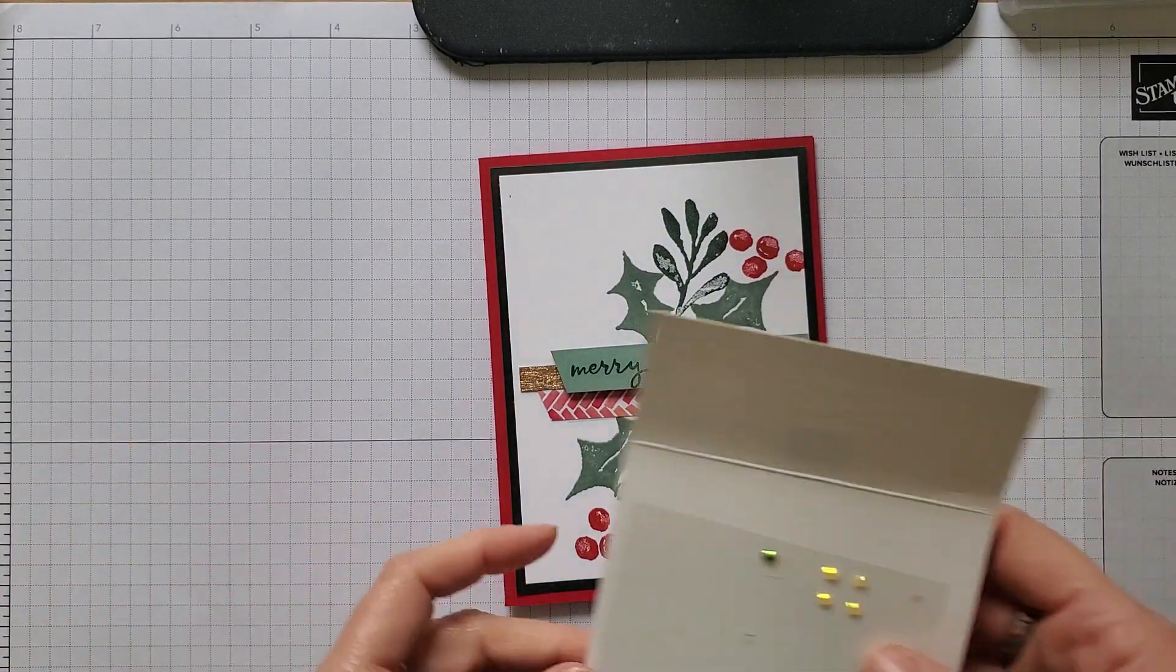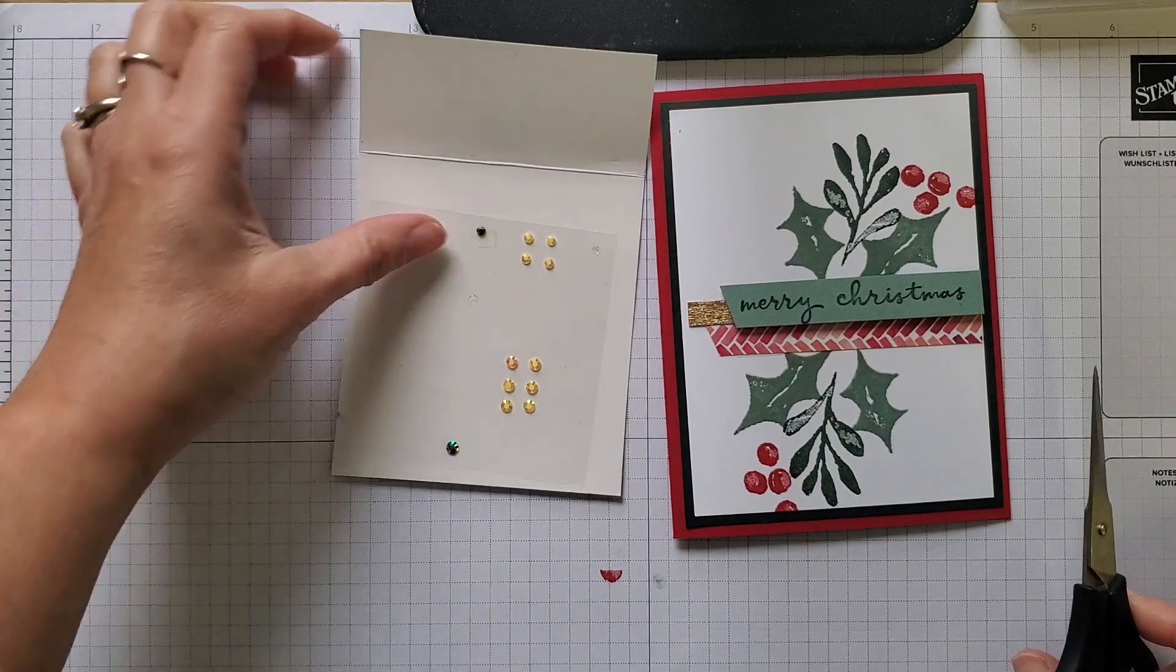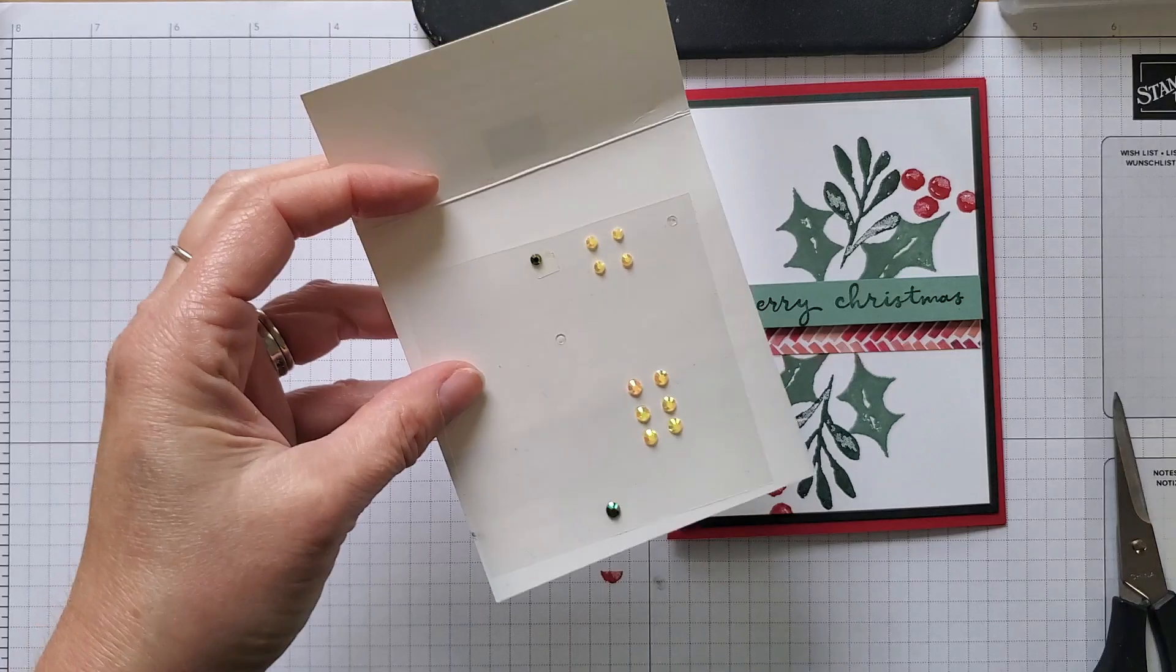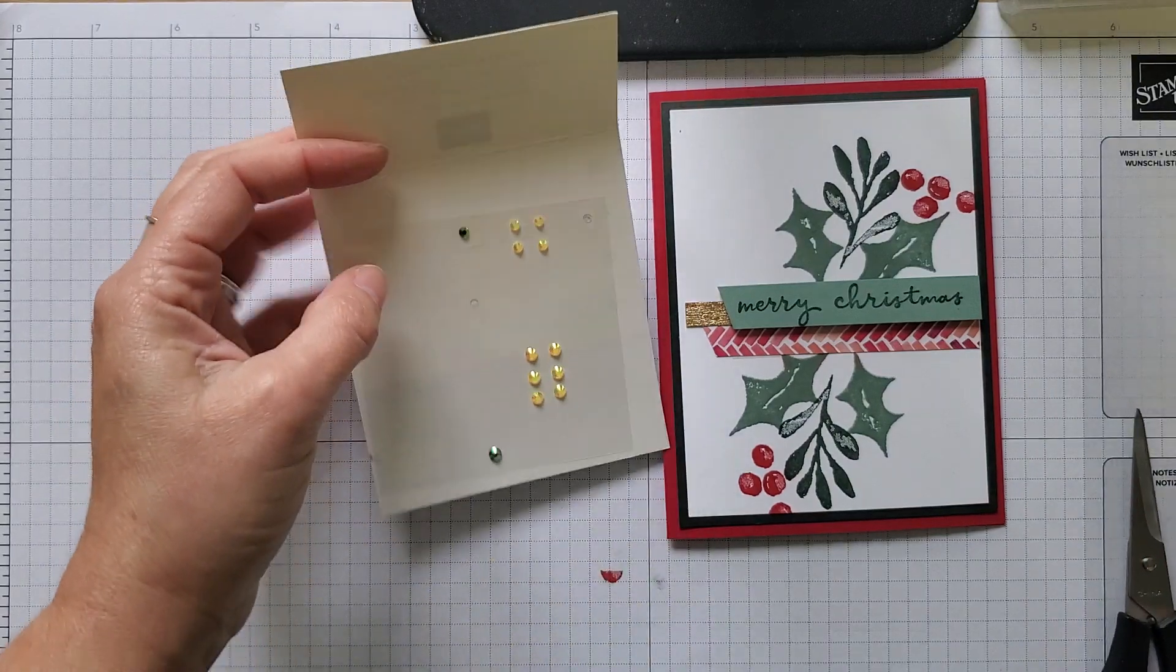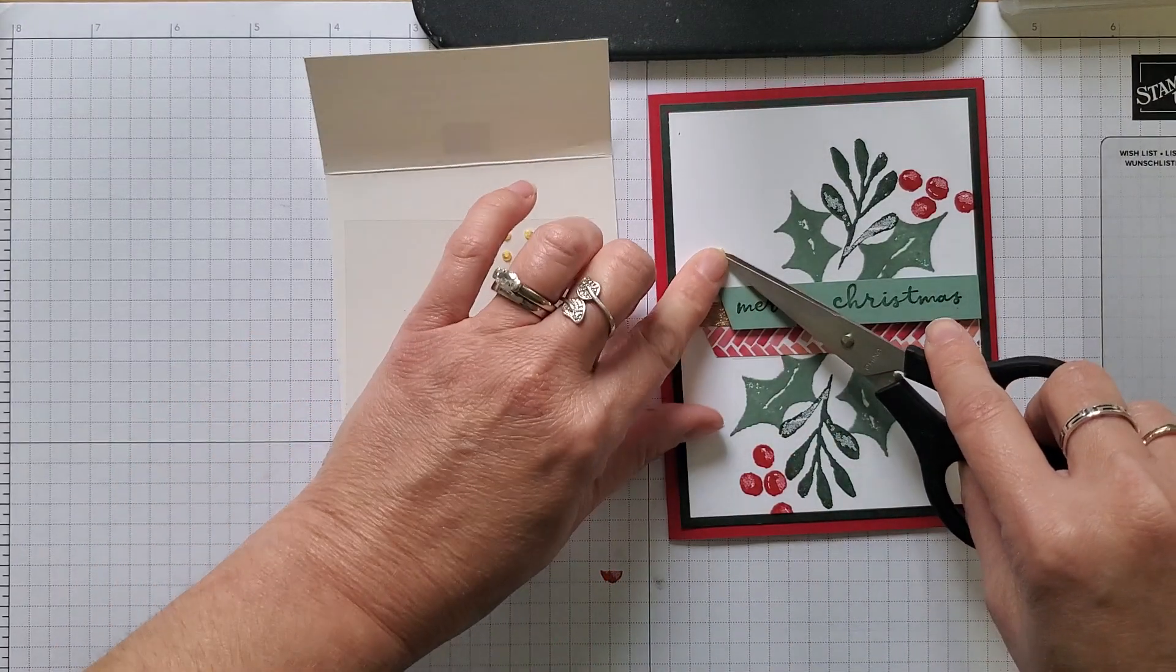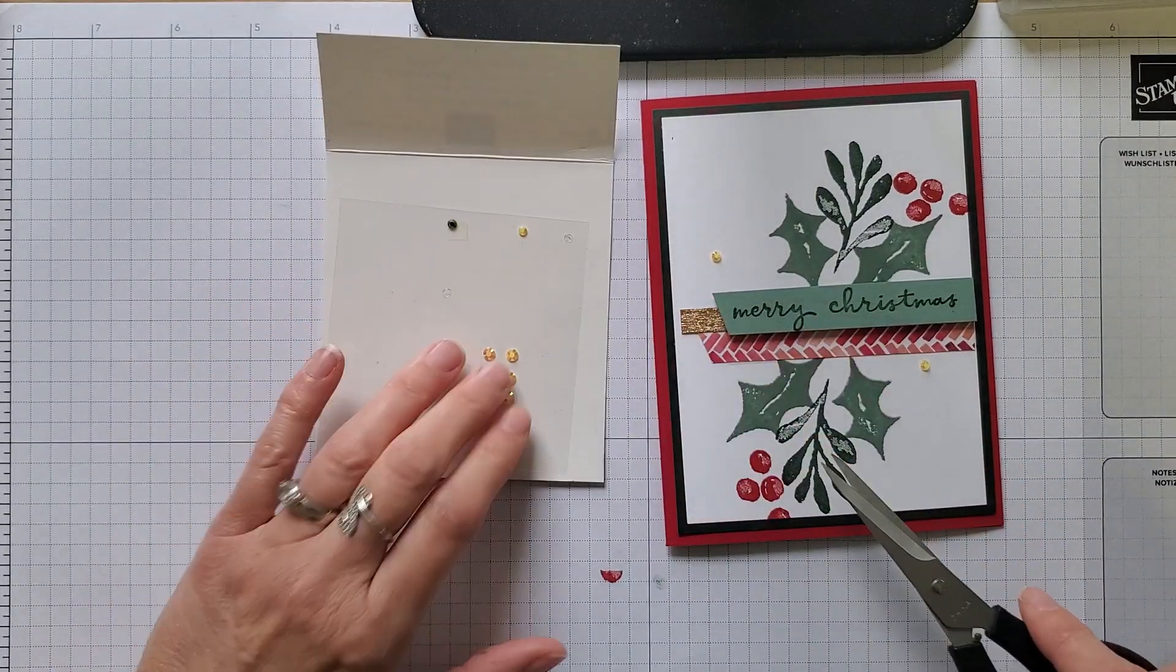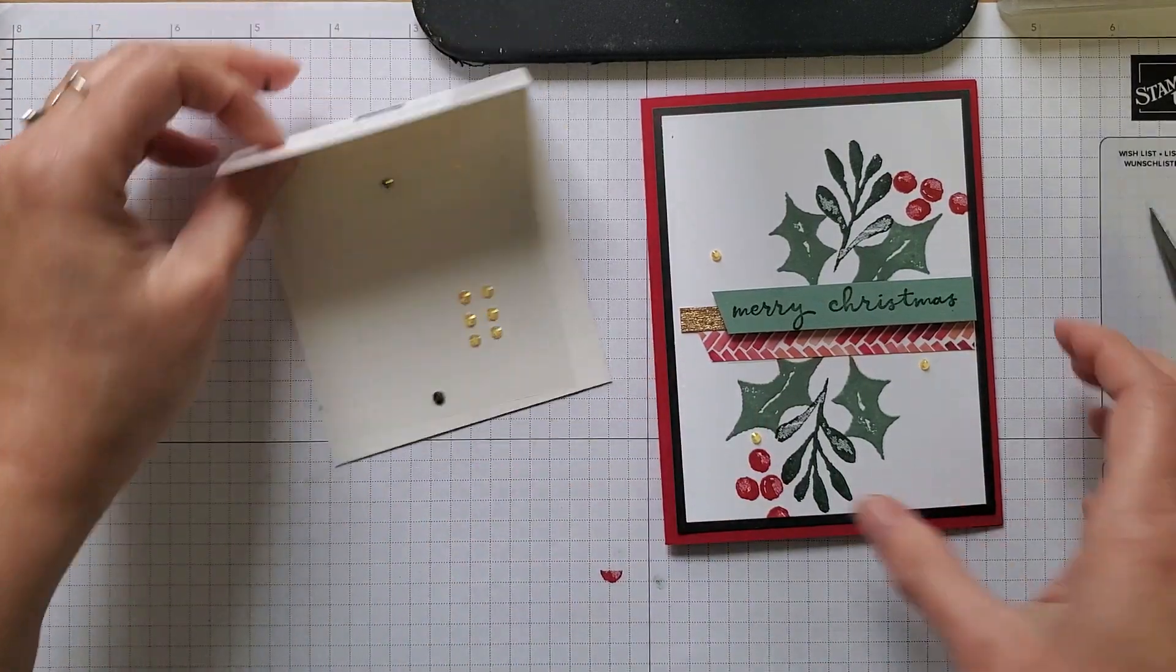So last thing is I'm going to add a few rhinestones here. I'm using the In Color Jewels because that is what the team is getting in their goodie bag this weekend. But as you can see, I've used most of mine. I would probably use the Evening Evergreens normally. But I'm going to use the yellow and pick that up from the gold here. It's kind of cool because they kind of pick up the colors of whatever is around them. So it will start to look a little bit greenish. And I'm just going to pop these down. I want to do at least three. So I'll put that like that. And there we have the finished card.